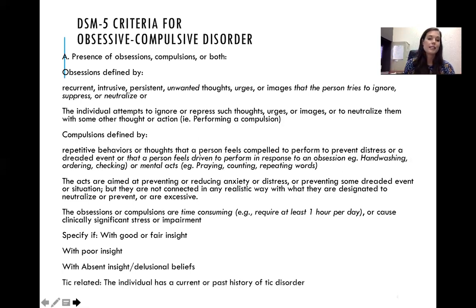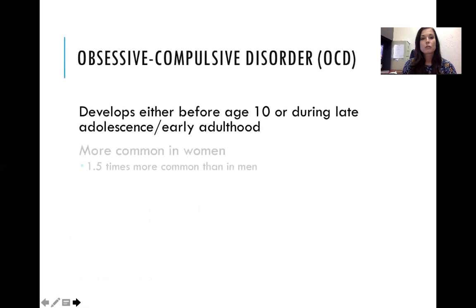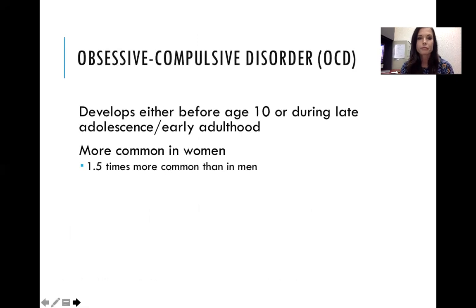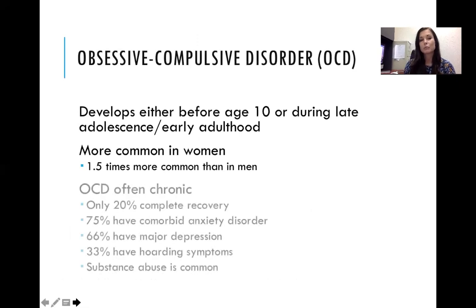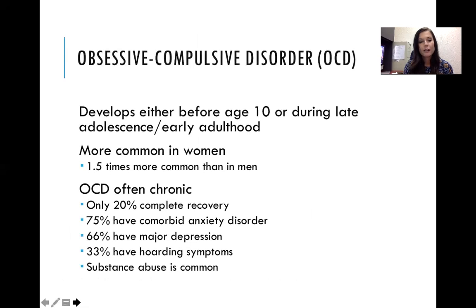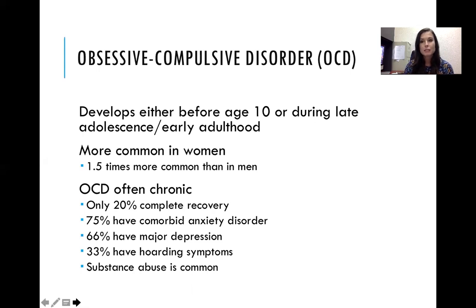You also want to specify if it's tic-related — if the individual has a current or past history of tic disorder. OCD develops either before age 10 or during late adolescence or early adulthood. It's 1.5 times more common in women than in men. OCD is often chronic — only 20% completely recover. 75% have a comorbid anxiety disorder, 66% have major depression, and 33% have hoarding symptoms, and substance abuse is common.